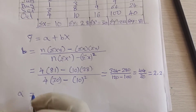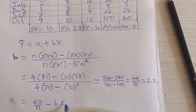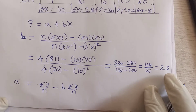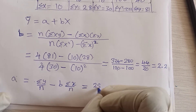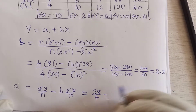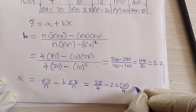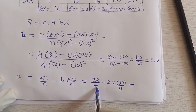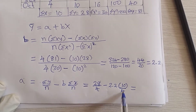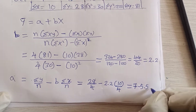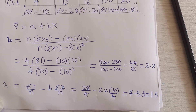To find a, the formula is: a = (Σy / n) − b(Σx / n). Substituting: Σy=28, n=4, b=2.2, Σx=10. So a = (28/4) − 2.2×(10/4) = 7 − 5.5 = 1.5. The value of a is 1.5.